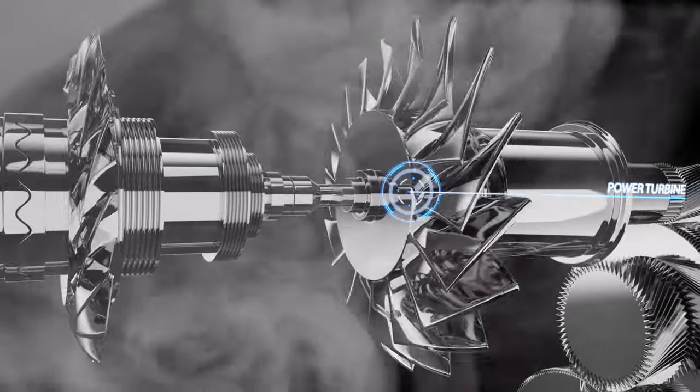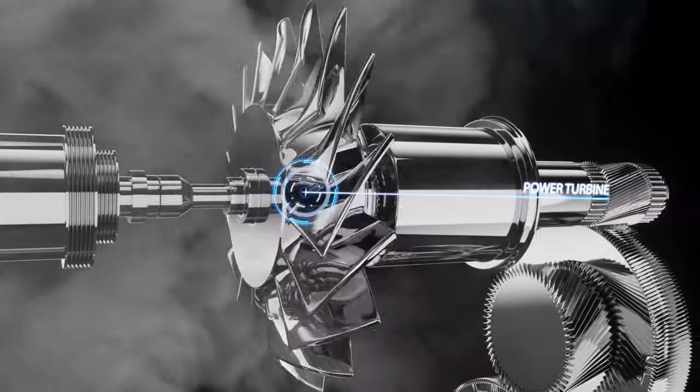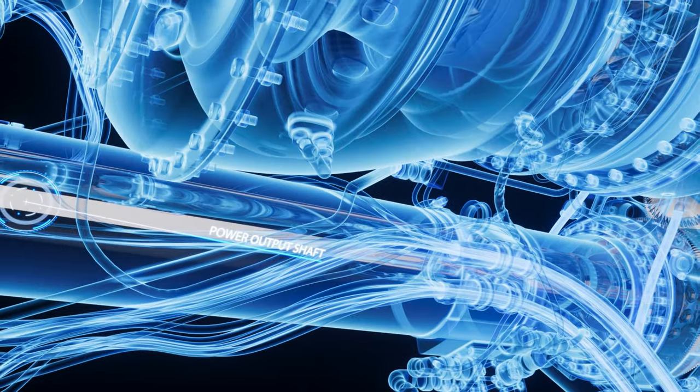This gas flows over the blades of the power turbine and turns the power output shaft, which is finally connected to the rotor system.